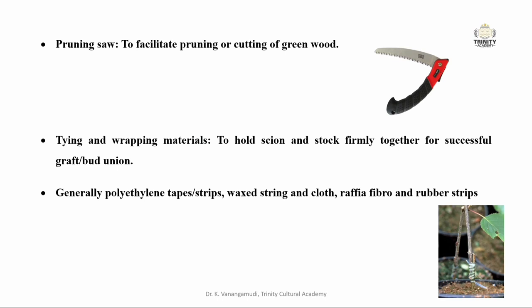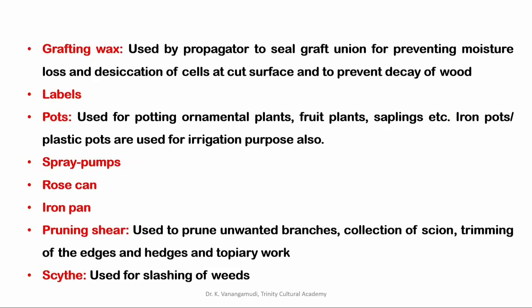Next are tying and wrapping materials, used to hold the scion and stock firmly together for a successful graft or bud union. Generally, polyethylene tapes, strips, waxed strings, cloth, and rubber strips are used. Grafting wax is used to seal the graft union, preventing moisture loss or desiccation of cells and preventing decay of wood. Labels are required before sale and may be made of paper, cardboard, wood, celluloid, aluminium, or plastic.